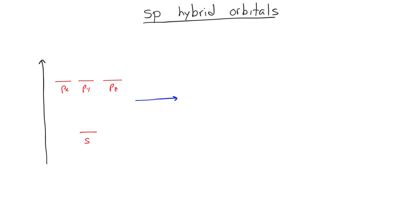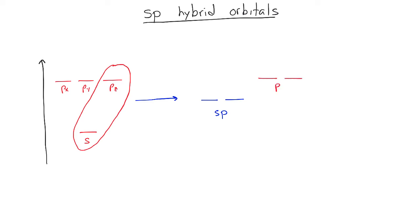In the case where we have one of the p orbitals overlapping with one of the s orbitals, we get a situation known as sp hybridization. In sp hybridization, two orbitals will hybridize, forming two sp hybrids, and there will be two unhybridized p orbitals remaining. The sp hybrid orbitals will want to get as far away from each other as they can, so they form directly across from each other. They are responsible for what we know as linear geometry. The two unhybridized p orbitals can overlap with another set of unhybridized p orbitals on an adjacent atom and can form not one, but two pi bonds.